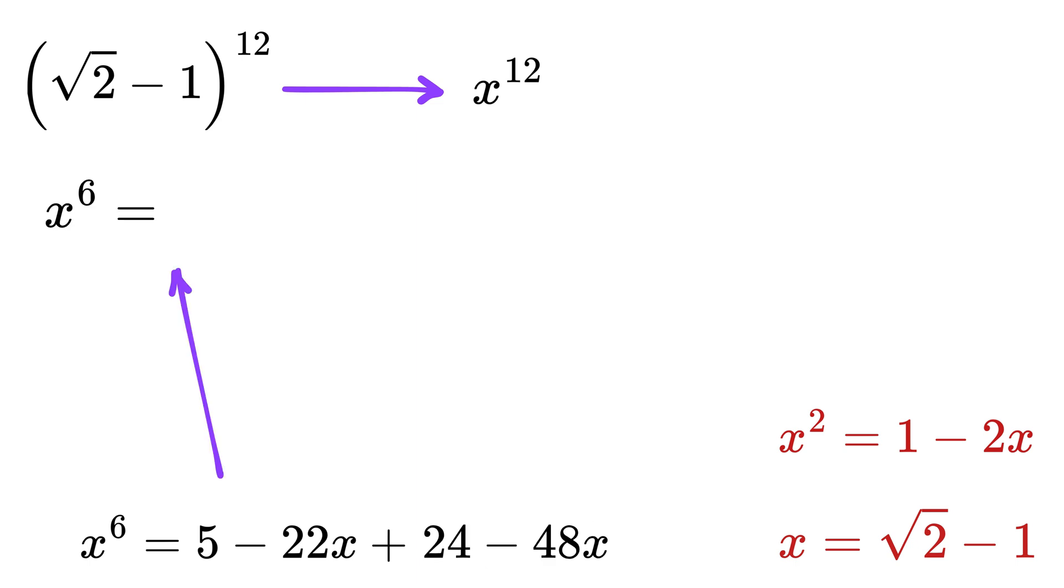Now again substitute x^2 as 1 - 2x, so this will become 24 - 48x. Thus we get x^6 = 29 - 70x.